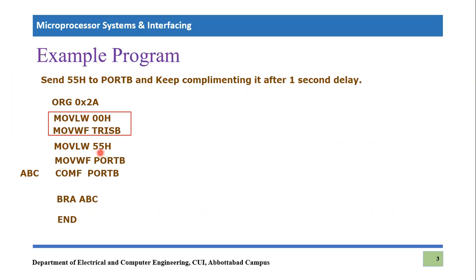Then we use the value 0x55 — we move this value into the working register using 'MOVLW 0x55', so 0x55 will be stored in the working register. Then we send it to Port B using 'MOVWF Port B'. That's what we wanted to do. Now for the next task — keep complementing it — we use the COMF instruction: 'COMF Port B'. That means we have complemented Port B — whatever data (0x55) was sent to Port B is now complemented.